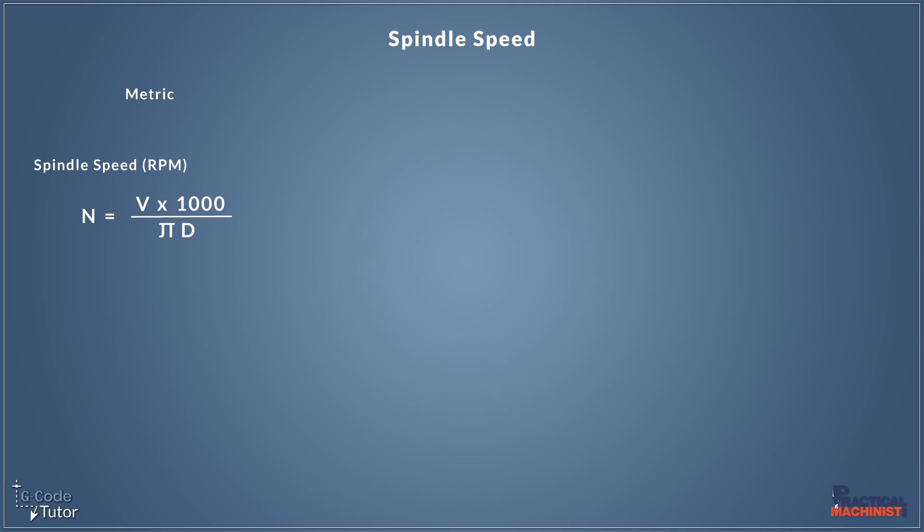So when we're programming our CNC machine, we need to give it a spindle speed designated with an S value. We need to look at how we're going to calculate that spindle speed.